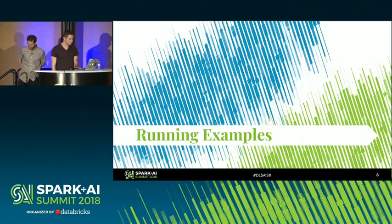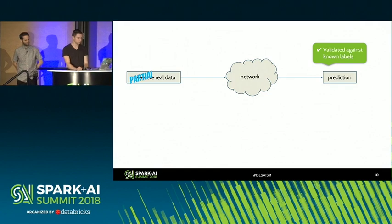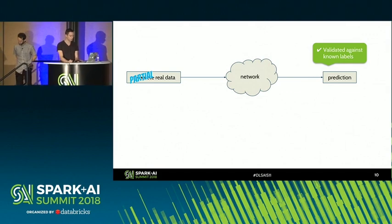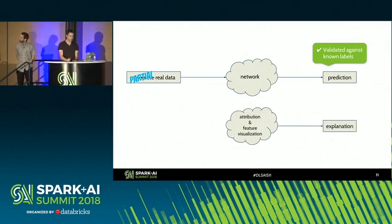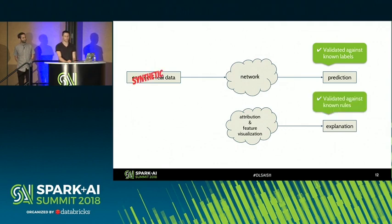Let's look at the examples we are going to use. Normally you have some complete real dataset, train your neural network, get some predictions, and calculate accuracy, recall, and so on. When trying to find explanations for why a neural network is doing something, real data might not be the best candidate because it's often noisy and there might be no clear rules. So we came up with synthetic examples that we created the rules for, and we know the rules for, and we measure attribution and feature visualization on those.